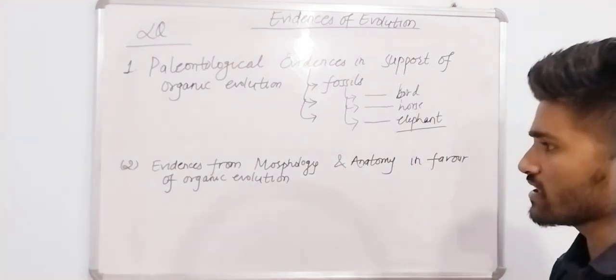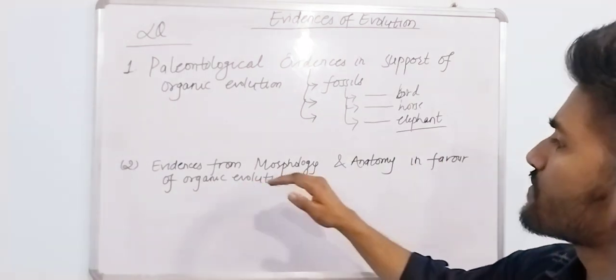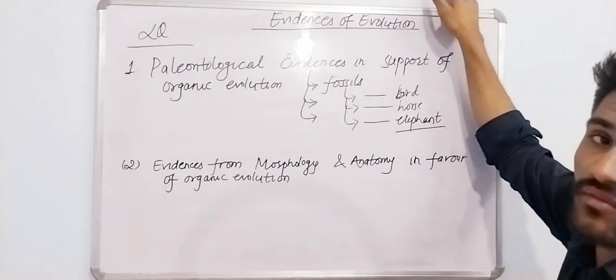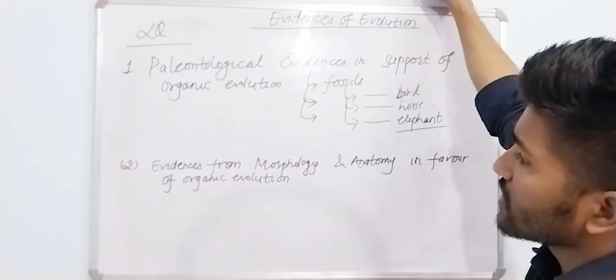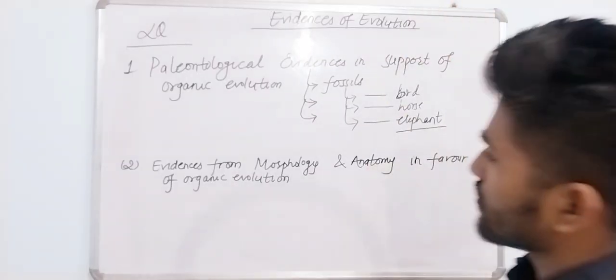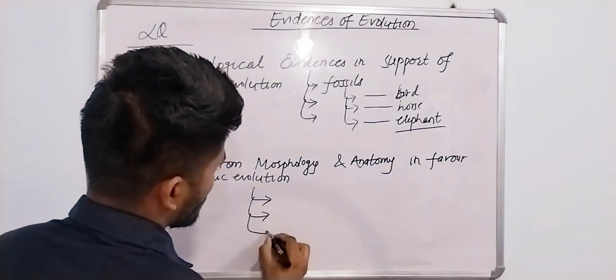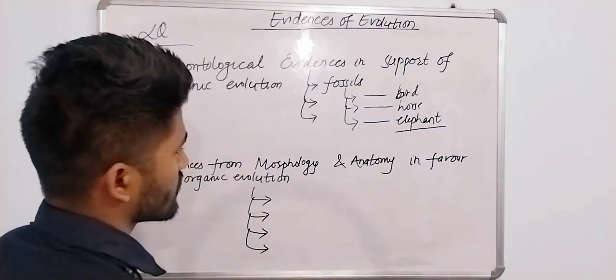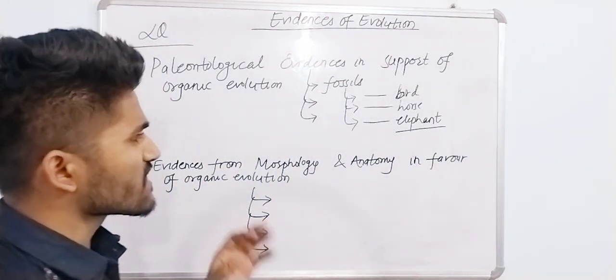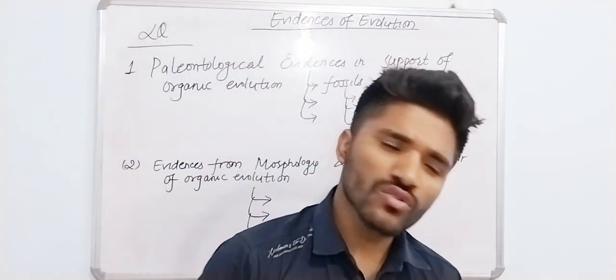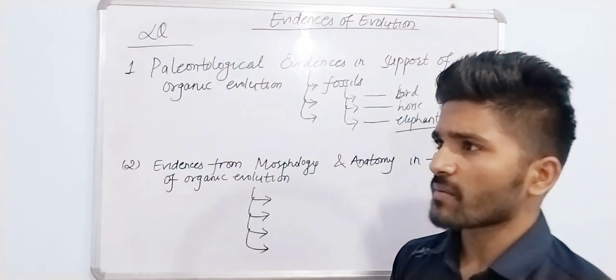For the next topic, evidences from morphology and anatomy in favor of organic evolution. Morphology and anatomy form the second section. Look at the question structure - it could be a long question or a short question.